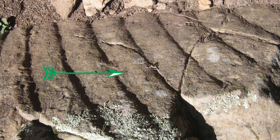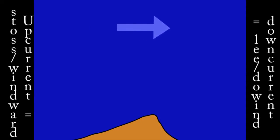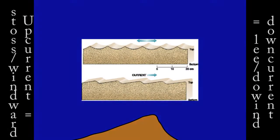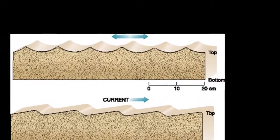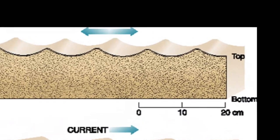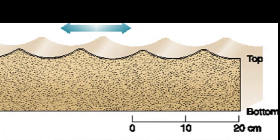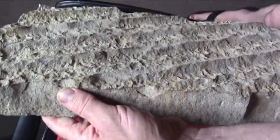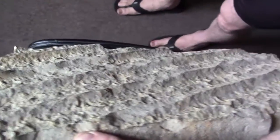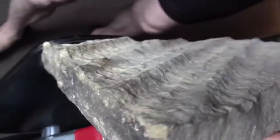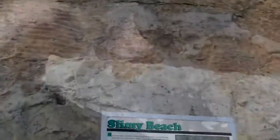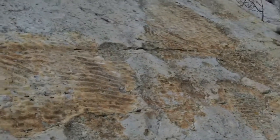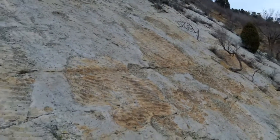Unidirectional flow makes asymmetrical dunes and ripples with a lee and stoss side. Ripples at the beach don't have a stoss side and a lee side, as the flow equally goes back and forth. The beach ripples that result are symmetrical, though they typically also have sharper ridges. This sandstone from southeast Iowa tells me of a time where there was a beach there, and these symmetrical ripples tell me of when my area near Denver was beachfront property.